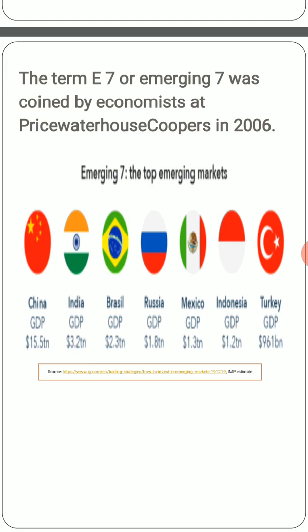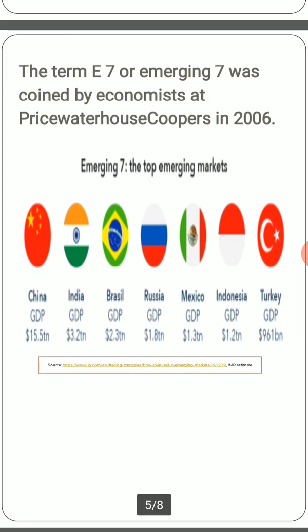Brazil has a GDP of 2.3 trillion dollars, Russia 1.8 trillion dollars, Mexico 1.3 trillion dollars, Indonesia 1.2 trillion dollars, and Turkey 961 billion dollars.